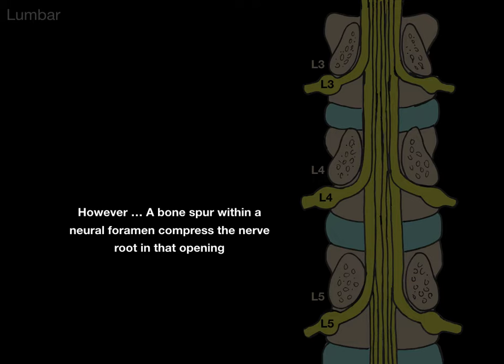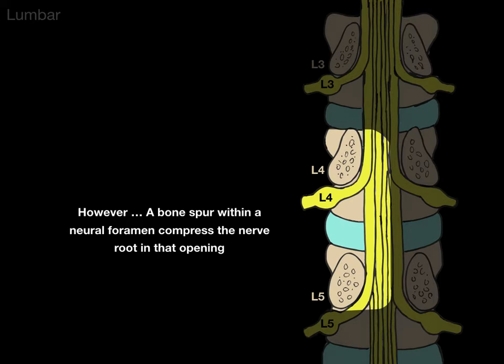A bone spur or tumor compressing within the neuroforamen compresses the nerve root in that opening. So there is the L4 neuroforamen — the one below the L4 vertebra — and it's hitting the L4 nerve.